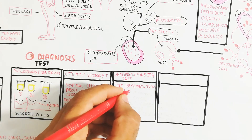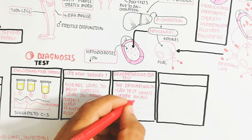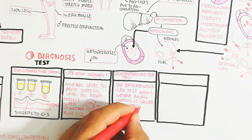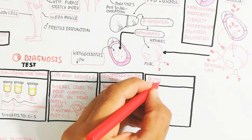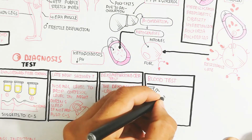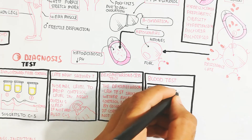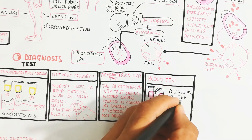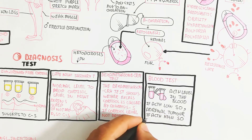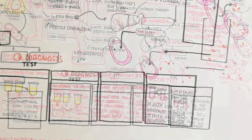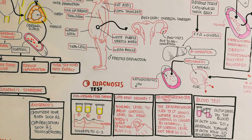The dexamethasone suppression test and dexamethasone-CRH test show whether excess cortisol is causing Cushing's syndrome. When we inject dexamethasone, if the cortisol level drops, it means Cushing's syndrome is not present. For blood tests, we measure the ACTH (adrenocorticotropic hormone) level: if ACTH is low, it suggests an adrenal tumor; if ACTH is high, a pituitary tumor is indicated.